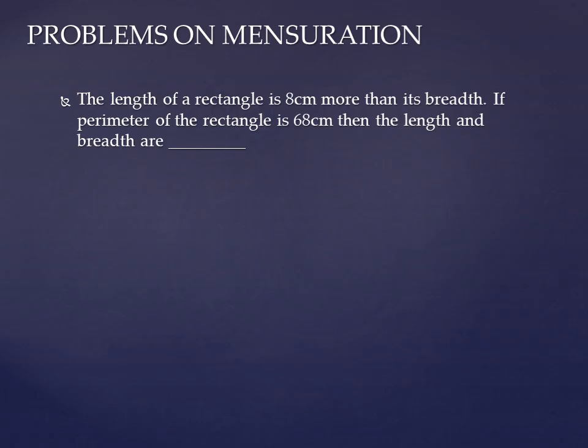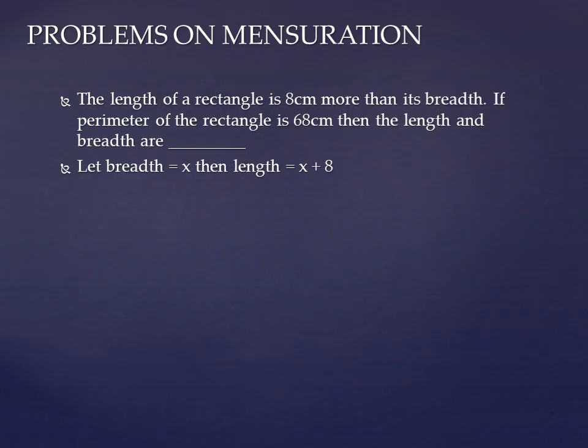We don't assume both length and breadth separately. Let the breadth be x. Then the length will be x plus 8, because it said 8 centimeters more than its breadth. Also in the question, the perimeter of the rectangle is 68 centimeters, meaning perimeter is equal to 68 centimeters. Since the perimeter is given, we will equate to the formula. The formula for perimeter of a rectangle is 2 of (l plus b) equal to 68.